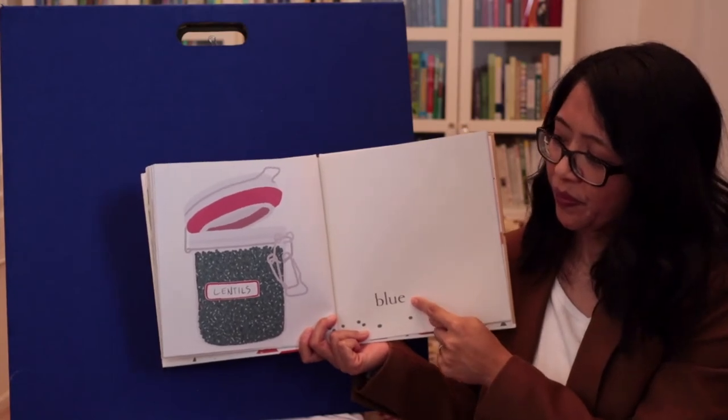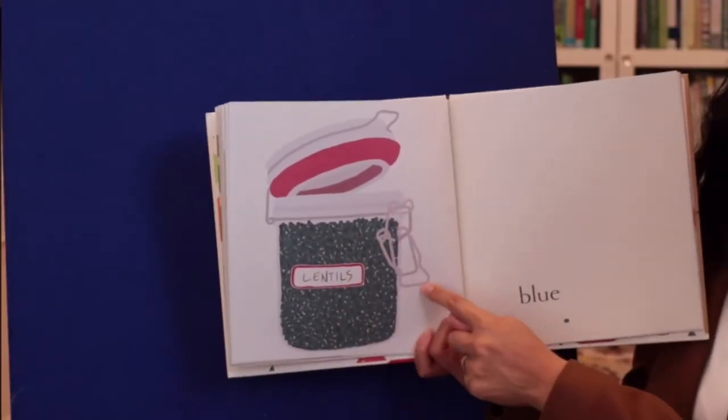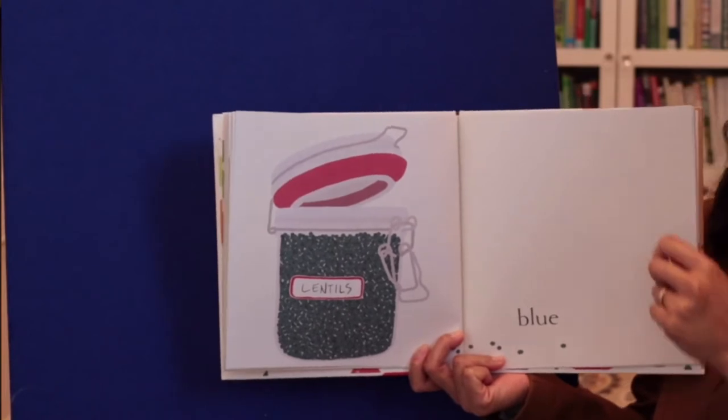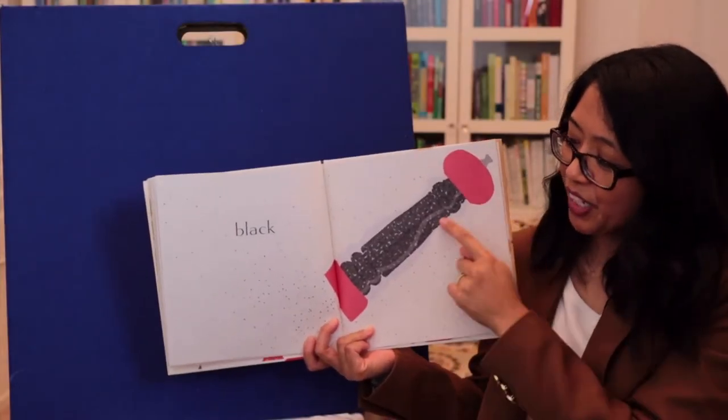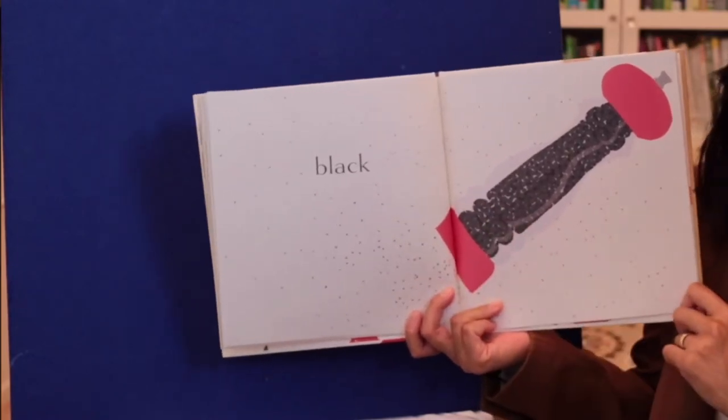Blue. This is a jar filled with lentils. Black. Oh, here's a grinder. It's grinding some peppercorns.